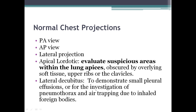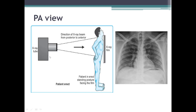The lateral decubitus view is rarely used to demonstrate small pleural effusions or for the investigation of pneumothorax and air trapping due to inhaled foreign bodies. In the PA view, the X-ray tube is posterior to the patient; the patient is standing erect facing the film. The direction of the X-ray beam is from posterior to anterior. The patient's chin is raised and shoulders are rotated anteriorly so that the scapulae don't overlie the lung fields. In this corresponding PA view, the mediastinum and cardiac structures are in midline, lung fields are symmetric, and they are in full inspiration.